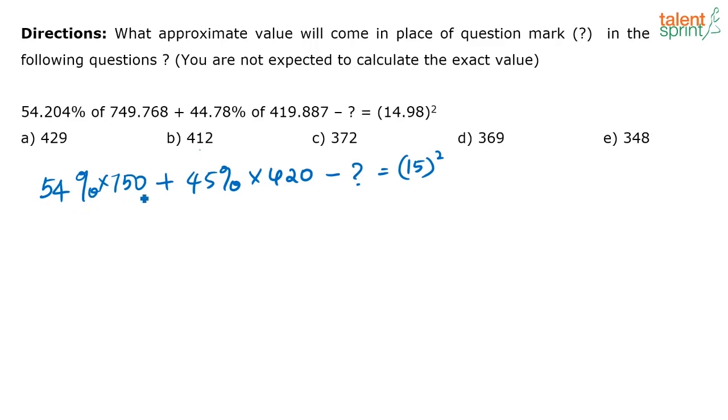Now if you have this, what do you do? You have 54 percentage of 750. One way to do it is 54 by 100 into 750. The other way is, instead of writing it like this, see you know what is 50 percentage of 750 - that is nothing but half of 750, which is 375. So 54 percentage of 750 is nothing but 375 plus 4 percentage of 750. What I'm trying to do is I'm splitting this percentage - this 54 percentage I am taking as 50 plus 4 percentage.